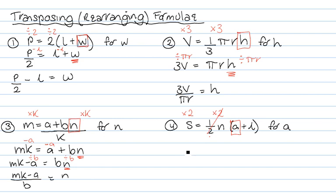So I now have 2S equals N bracket A plus L. Now I need to get rid of that N. That bracket is being multiplied by N. So I divide by N. So I now have 2S over N equals A plus L. I want to get the A on its own still. So I need to get rid of that plus L. So I take L from both sides. So I have 2S over N take L equals A. Which is now complete.